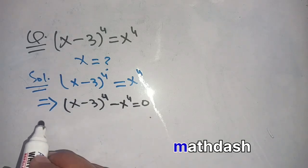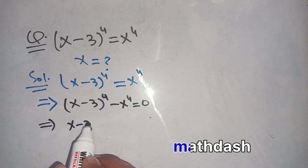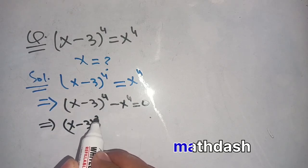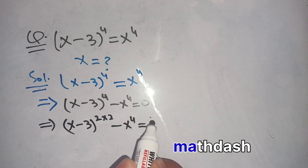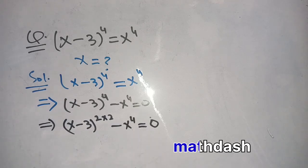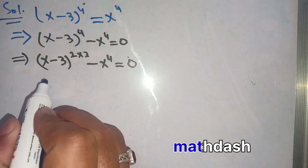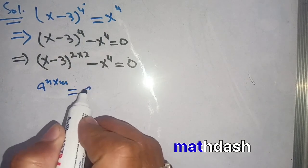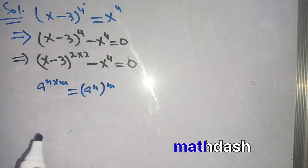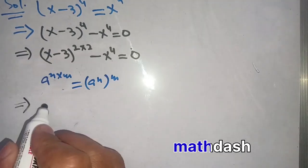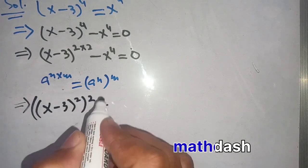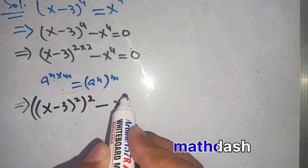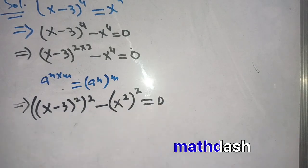In the next step, we rewrite it: the exponent 4 can be written as 2 times 2. We know that a power n times m is equal to a power n, bracket power m. Using this identity, we write our equation as (x minus 3) squared, whole power 2, minus (x squared) whole power 2 is equal to 0.